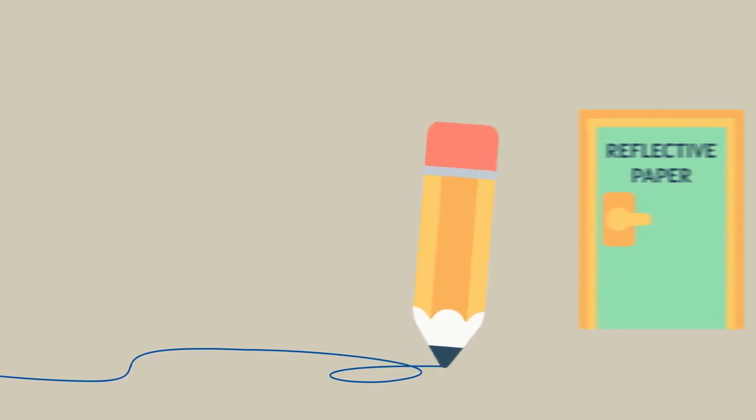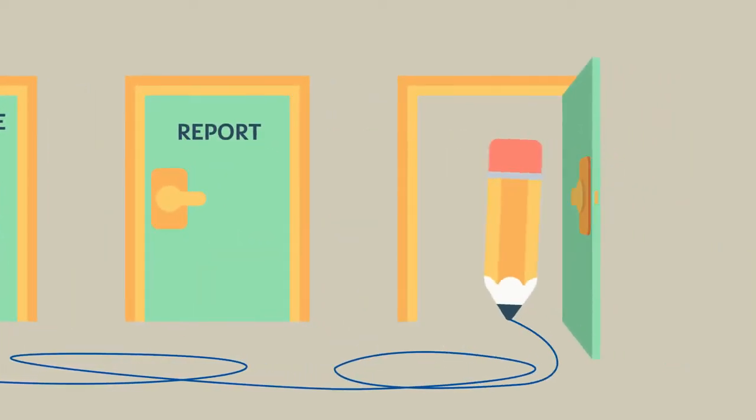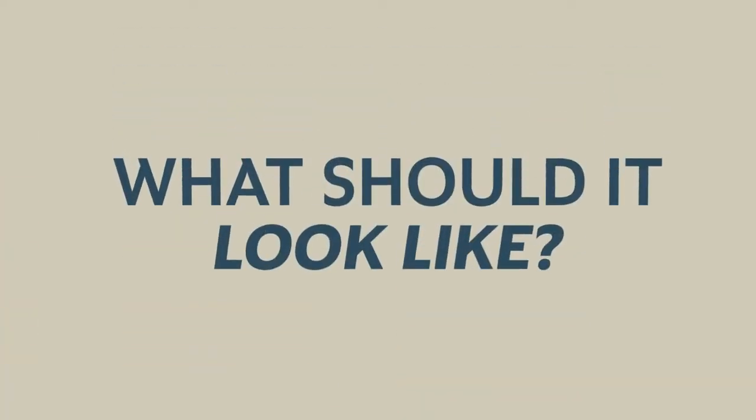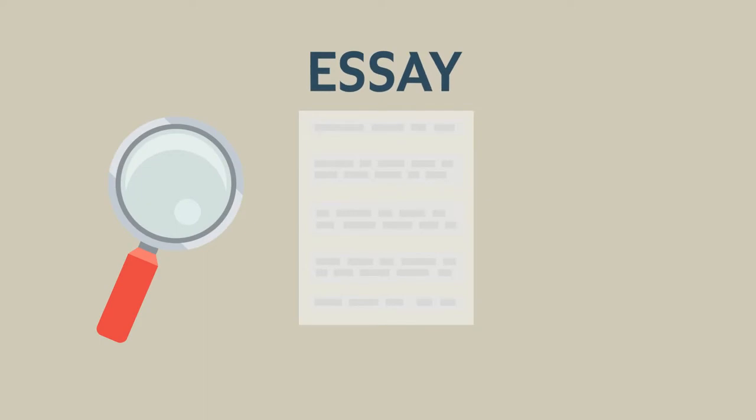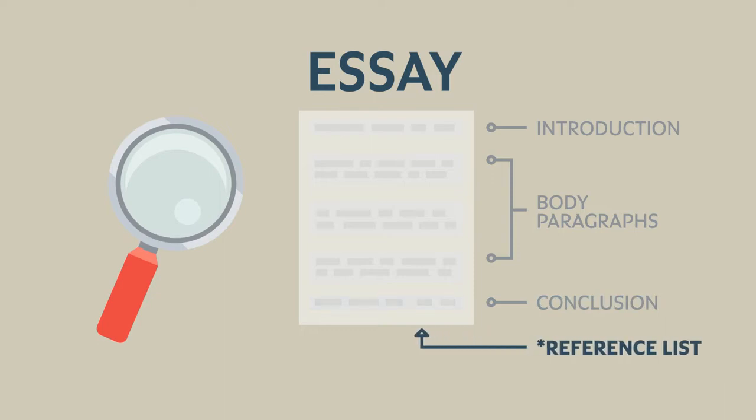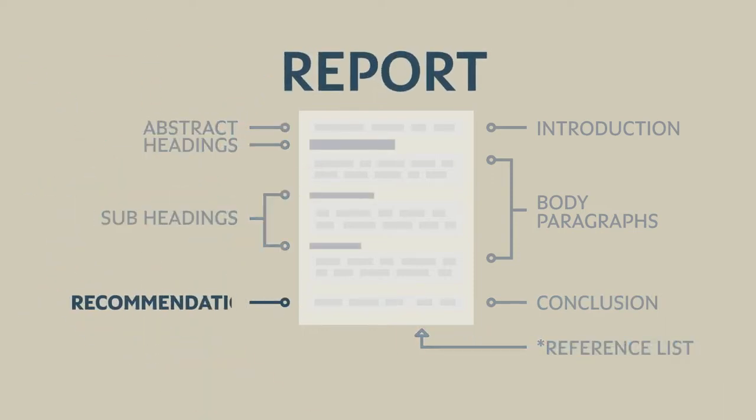What type of assignment are you writing? Your task instructions and feedback form might explain the structure, formatting, or type of assignment. An essay usually has an introduction, body paragraphs, a conclusion, and a reference list. So does a report, but there are usually some extra parts.